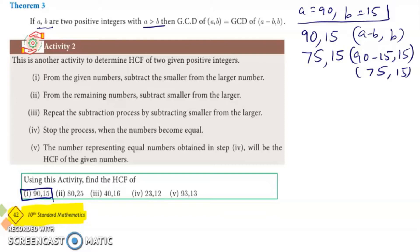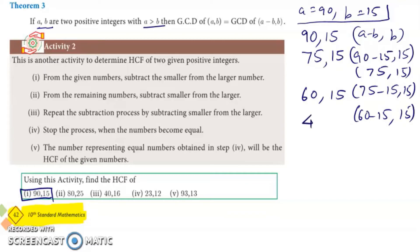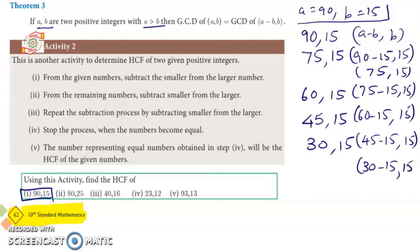Now let's repeat the same process. Repeating the same process, we get 4 minus... keeping 15 and subtracting repeatedly. So 60 and 15, then 45 and 15. Keep repeating until both numbers become equal. So 45 minus 15 and 15 gives us 15 and 15.